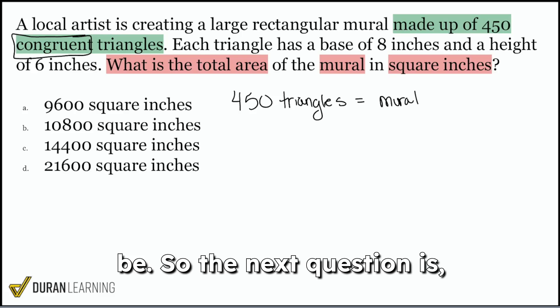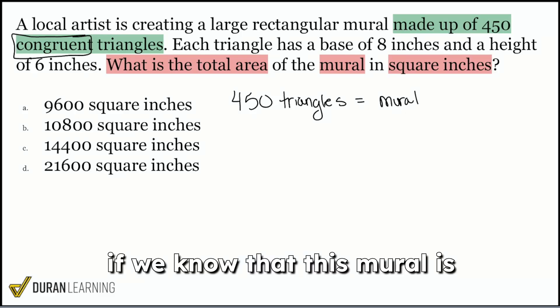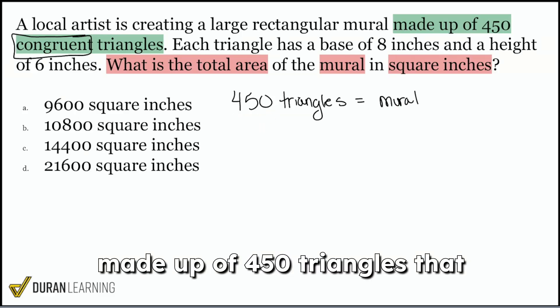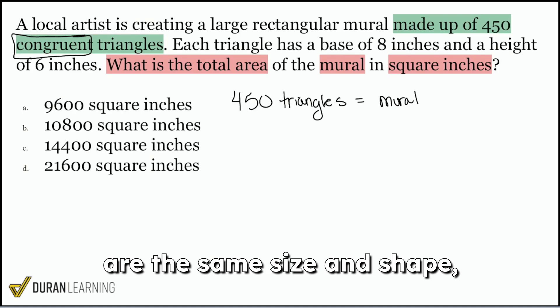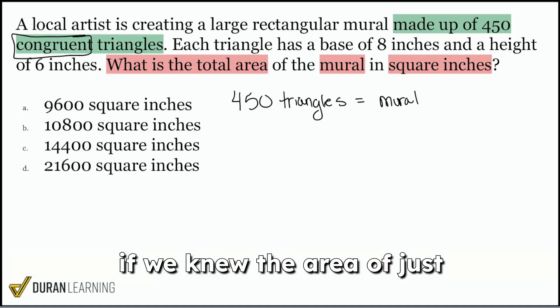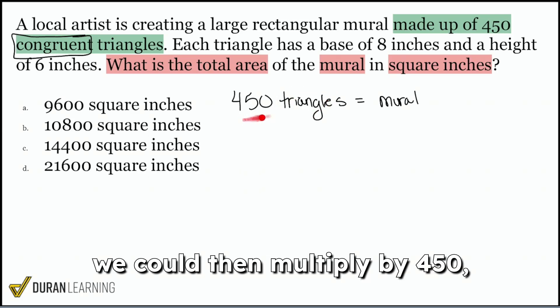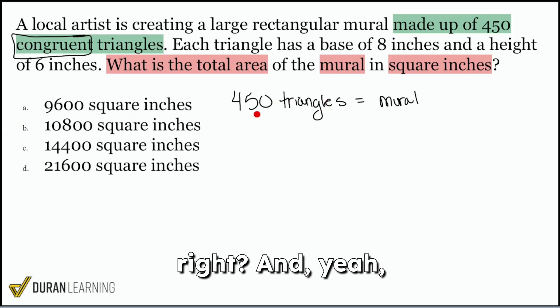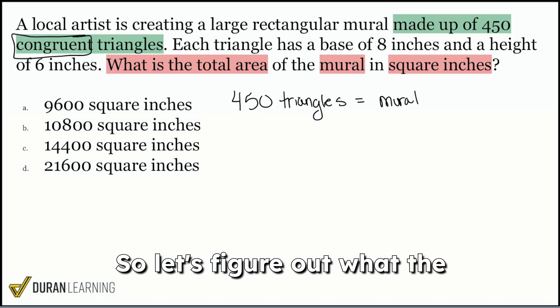So the next question is, well, if we know that this mural is made up of 450 triangles that are the same size and shape, well, if we knew the area of just one of those triangles, we could then multiply by 450, right? And yeah, that's exactly what we could end up doing, and that's what we will aim to do. So let's figure out what the area of just one of these triangles is.